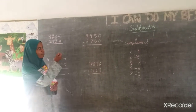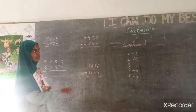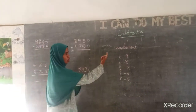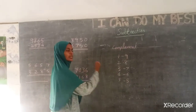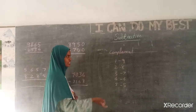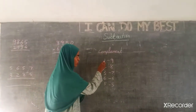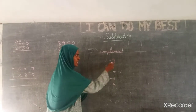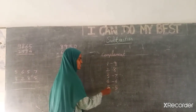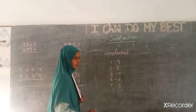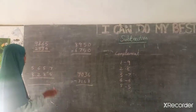Now we will go for the 4-digit numbers, the same route. We can use the complement method. Let's recollect: complement for 1 is 9, complement for 2 is 8, 3 is 7, 4 is 6, 5 is 5. Let's start.